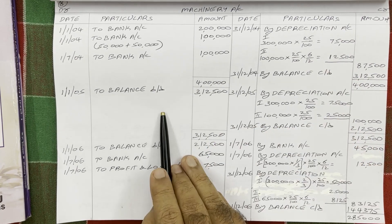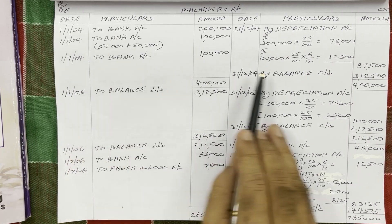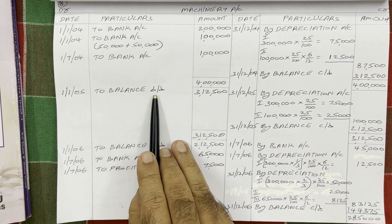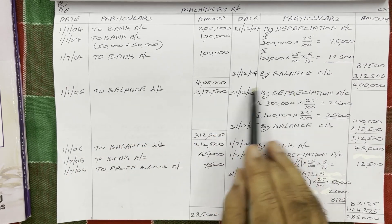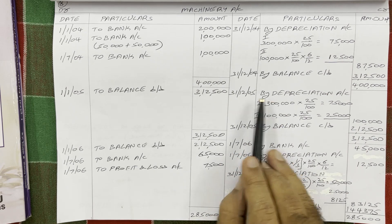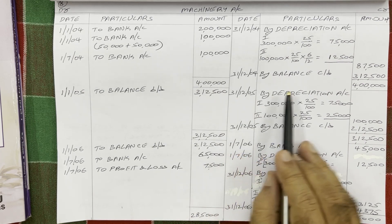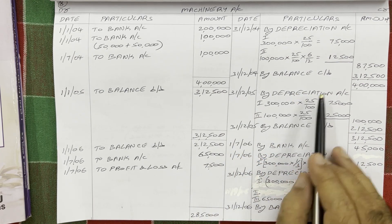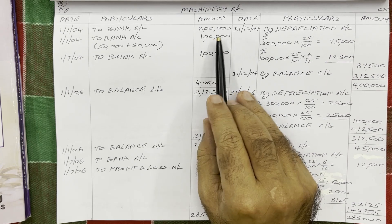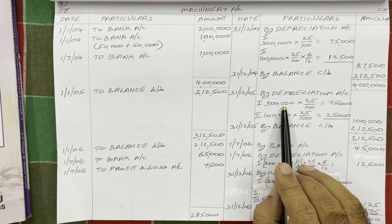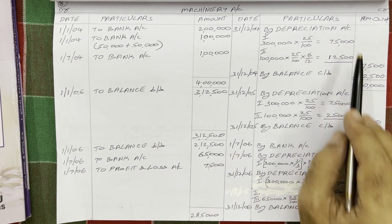Now come to the second year. The next day's date is 1st January 2005 — we bring the balance carried down here, so write to balance brought down: 3 lakh 12,500. In 2005 there is no extra purchase and no sale. At the end of 2005, that is 31st December 2005, depreciation must be provided on both assets. This is the fixed installment method, so every year depreciation is calculated on the original cost only. First asset original cost is 3 lakh at 25% for the full year: 75,000.